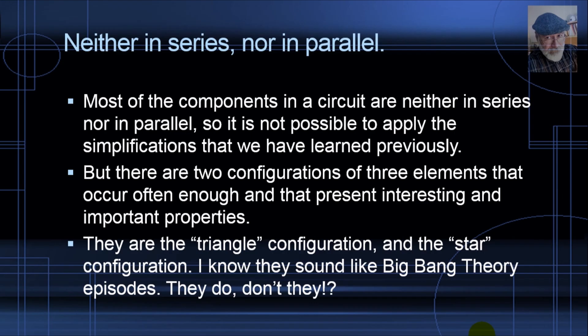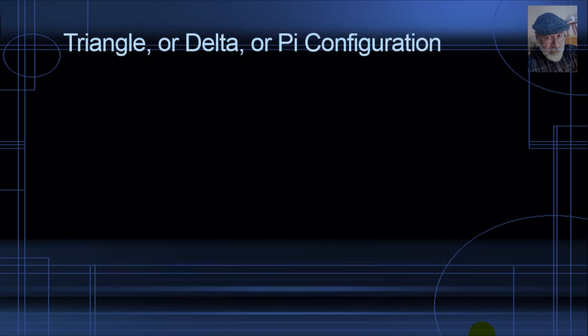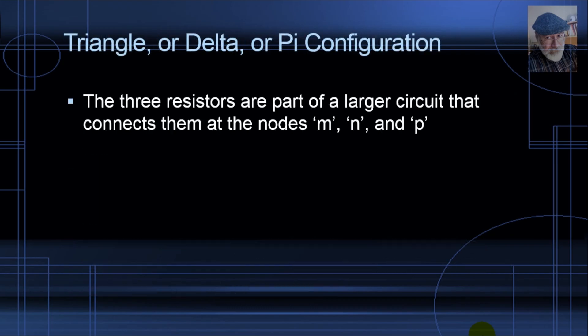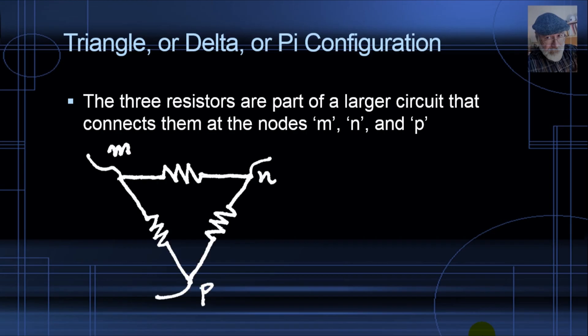They sound like Big Bang Theory episodes, right? But they are not, I promise. The three resistors I am about to draw are part of a larger circuit that I am not showing, which connects to that group through the nodes M, N, and P. Look at them — that configuration is what we call a triangle of resistors.